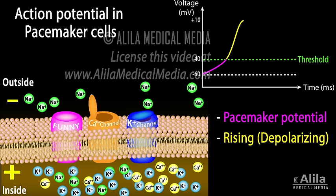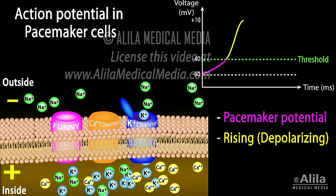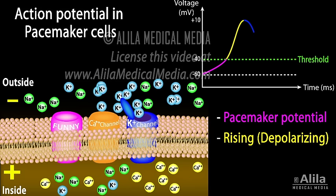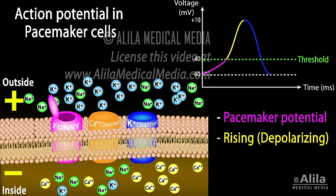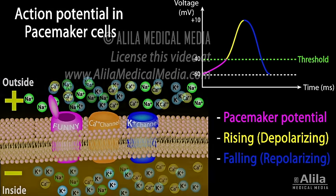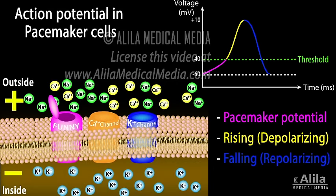At the peak of depolarization, potassium channels open, calcium channels inactivate, potassium ions leave the cell, and the voltage returns to negative 60 millivolts. This corresponds to the falling phase of the action potential. The original ionic gradients are restored thanks to several ionic pumps, and the cycle starts over.